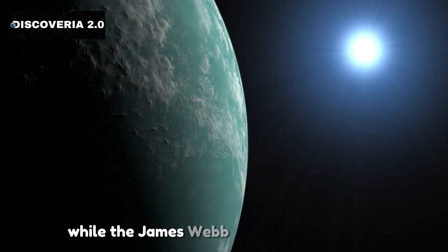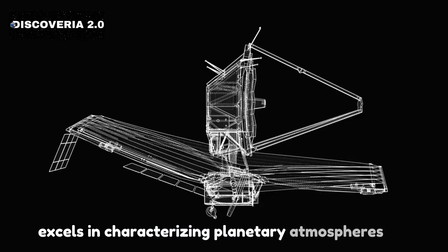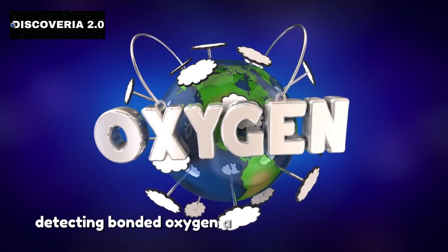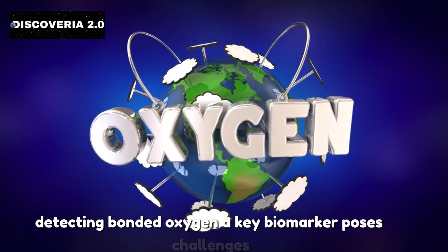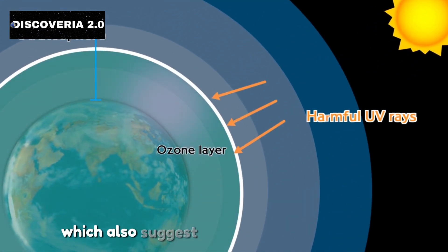While the James Webb Space Telescope excels in characterizing planetary atmospheres, it also has limitations. For instance, detecting bonded oxygen, a key biomarker, poses challenges. However, it is equipped to identify other elements such as ozone, which also suggest a healthy atmosphere.